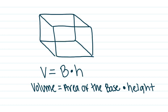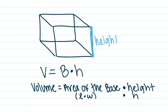Let's talk about all the different dimensions on this prism. The area of the base is your length times your width, and then you multiply by height. Height is how tall this box is. Length is how long your box is. Width is how wide your box is.